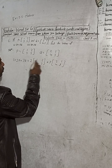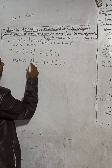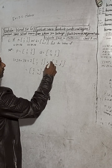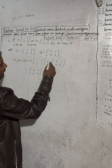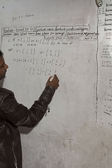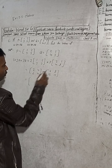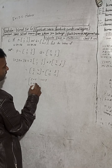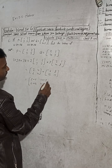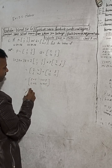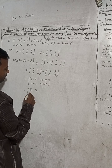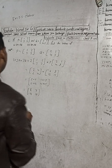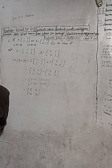Multiply 2 to each element: 2×1=2, 2×2=4, 2×3=6, 2×2=4. In the same way, multiply 3 to each element of Q: 3×2=6, 3×1=3, 3×4=12, 3×5=15. So the addition is: 2+6=8, 4+3=7, 6+12=18, 4+15=19.